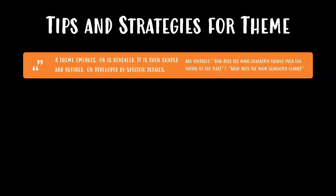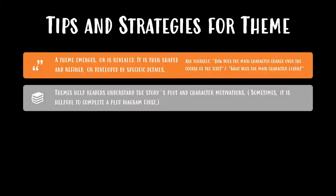Some things you can ask yourself are: how does the main character change over the course of the text, and what does the main character learn over the course of the text? Another thing is that themes help readers understand the story's plot and motivations of the characters. Sometimes it's helpful to complete a plot diagram first so that you can understand the major events of the story, and then use that information to help you figure out the theme.